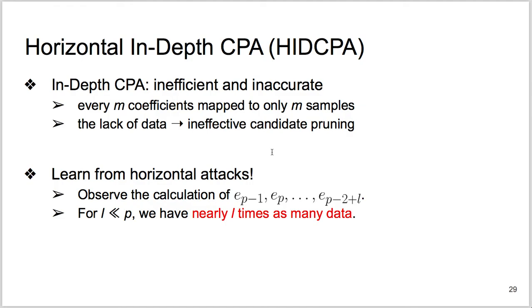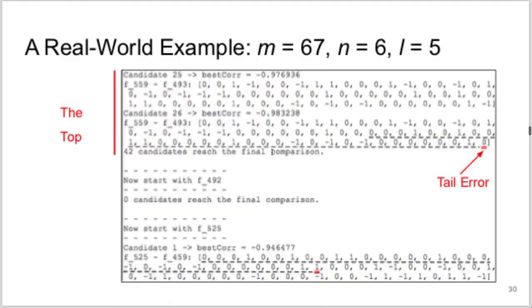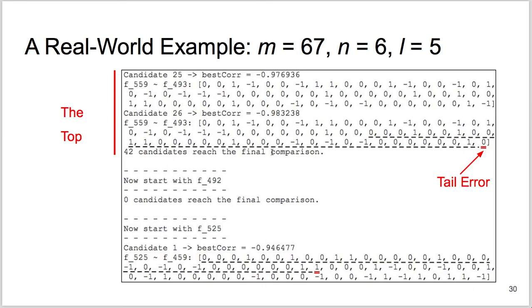Therefore, if we observe L minus one more output coefficient calculations, we have almost L times as many data. Here is a real-world example. We observe five output coefficient calculations rather than one. So the candidate pruning is now effective. Only 42 hypotheses of 67 coefficients survive in the top block recovery. Unfortunately, there is one tail error. So the middle block recovery has no survivors. And the rollback mechanism now gets triggered. The third block recovery, the bottom block recovery, is meant to correct tail error and it succeeds.